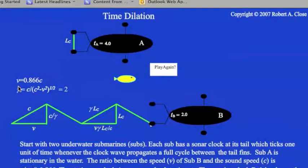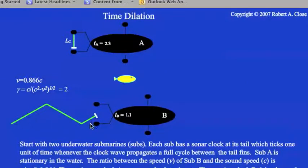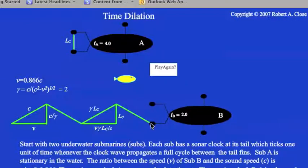That means that the gamma factor of special relativity, which is the relationship between the wave speed and the clock speed here basically, is equal to 2. So what that means is that as the moving submarine propagates, the wave has to travel farther between each tick of the clock. And it travels farther by this gamma factor, this factor of 2. The hypotenuse here is twice as long as this short side, which is the direction of the stationary clock.